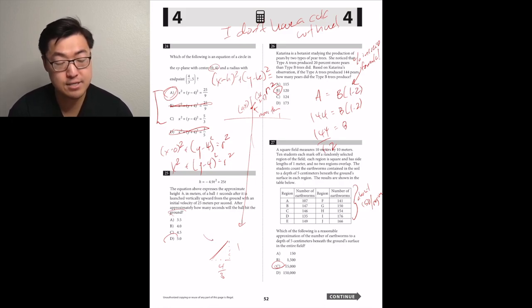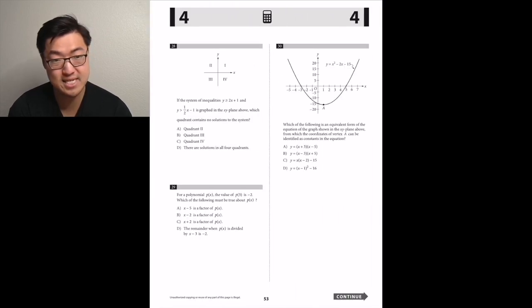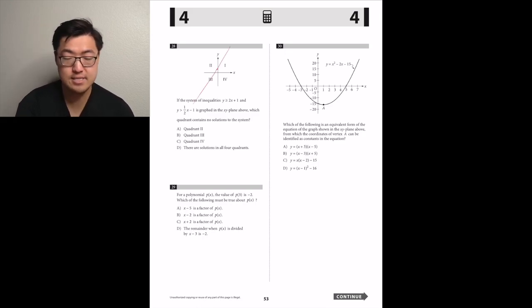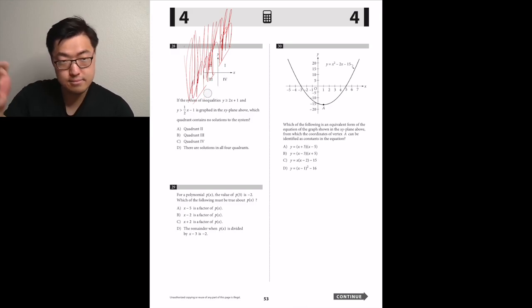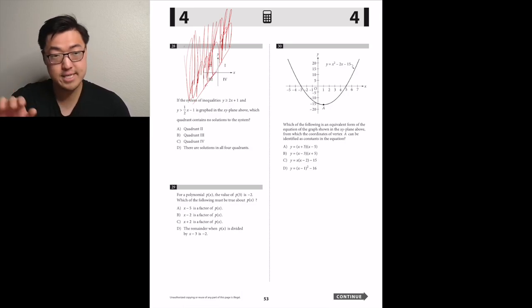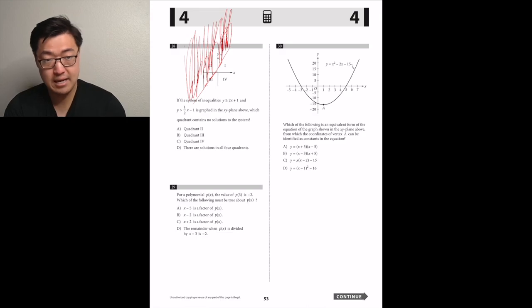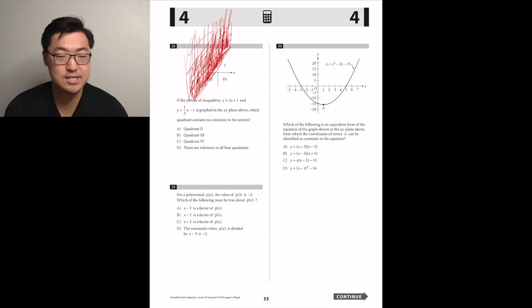Number 28. If the system of inequalities Y is greater than or equal to 2X plus 1, and Y is greater than one half X minus 1 is graphed on the XY plane, which quadrant contains no solutions to the system? If you want to graph an inequality of like Y is greater than or equal to 2X plus 1, you graph the line of Y equals 2X plus 1. So it'll have a Y intercept of 1 and a somewhat steep slope of 2. Then the greater than or equal to means that you shade everything above that line, including the line itself. Now, if we draw that line, Y intercept of 1 with a slope of 2, you'll notice that the line, once you shade everything above it passes through sectors 1, 2, and 3, it doesn't pass through 4. So if they're asking me what the system doesn't contain, then well, given that this line doesn't contain sector 4, I'm pretty sure that the answer is 4.